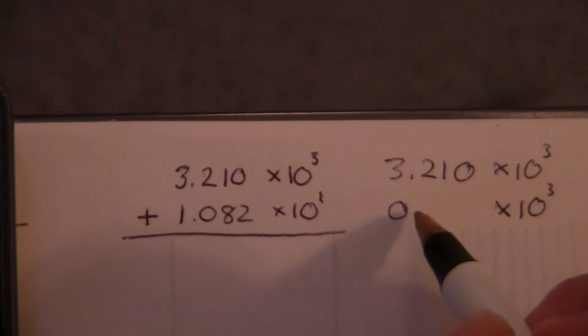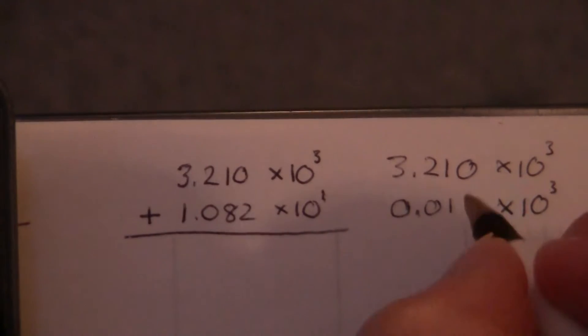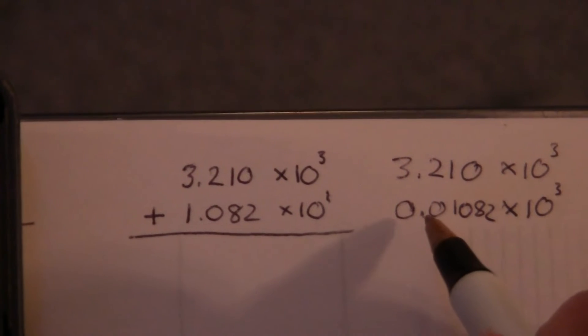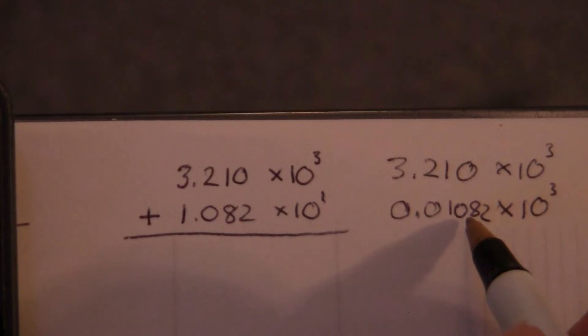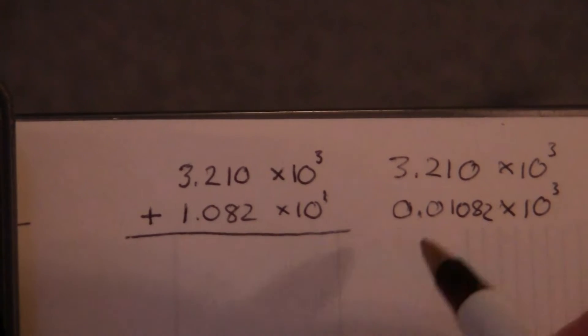Let's write this out. 0.01, and I didn't leave enough room, 0.82. Now 1, 2, 3 is the same as moving it one place.